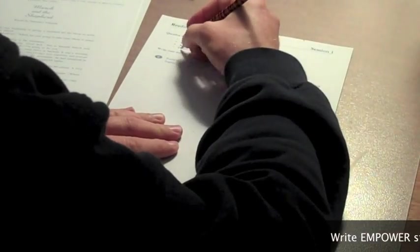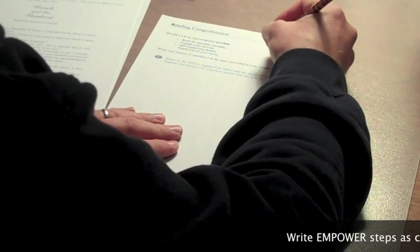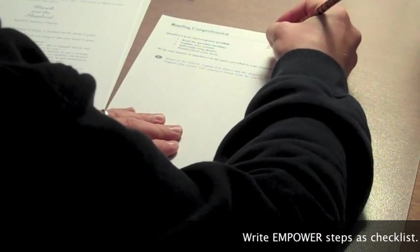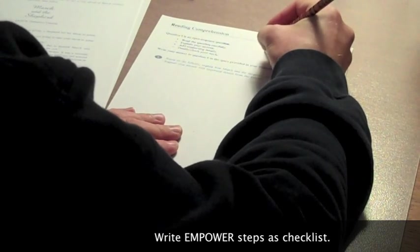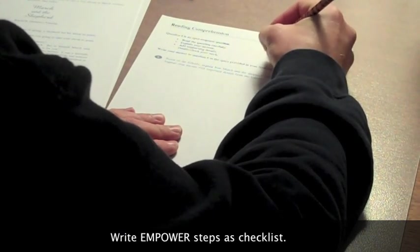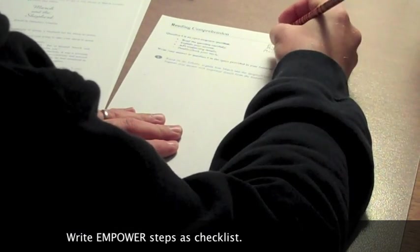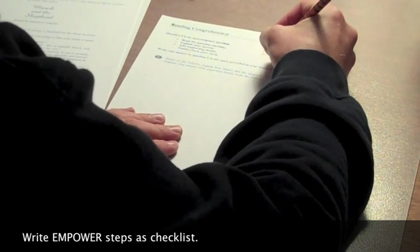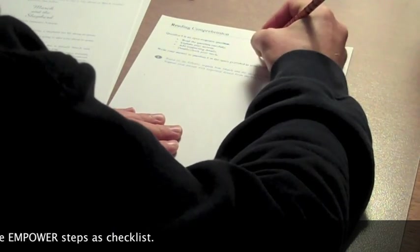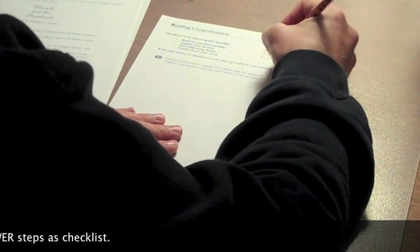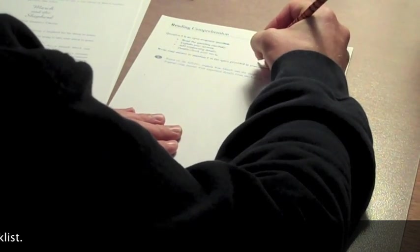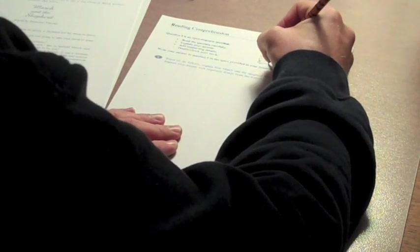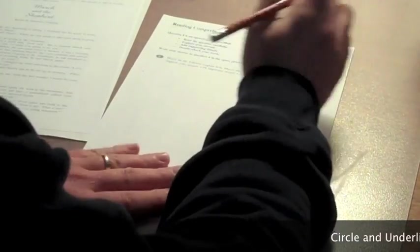The first thing I notice is that question six is an open response question, so I want to make sure I remember to use my acronym EMPOWER. I'm going to evaluate, make a plan, then organize, write, evaluate, and rewrite.